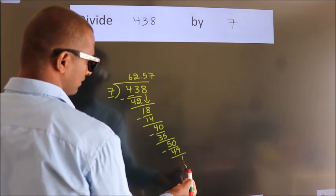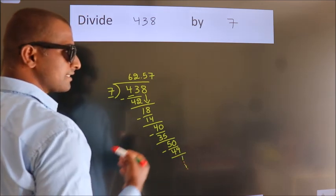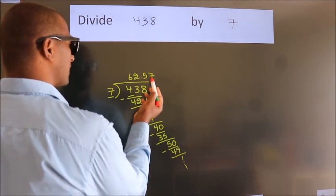It is enough if we do up to 2 decimal places, and you can continue the division from here.